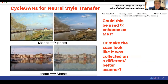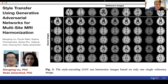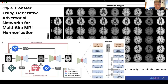Cycle GANs are a recently developed method for neural style transfer. They can take the content of an image—even a painting—and transfer it to produce a high-quality photo of the same scene. This has been adapted using radiologic scans to make scans look like they were collected on a different or even better scanner. Work by Nader Jahanshad's group and postdoc Mengting Liu has applied this to great effect with MRI, making scans match a reference—in this case ADNI—even though they were collected from diverse scanners and centers worldwide, while keeping the content of the image and quantitative metrics unchanged.